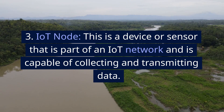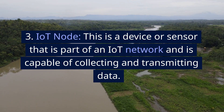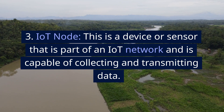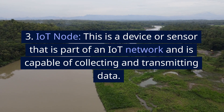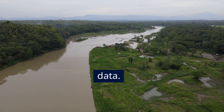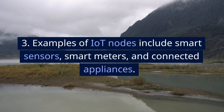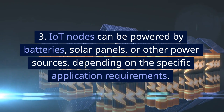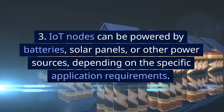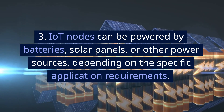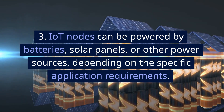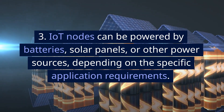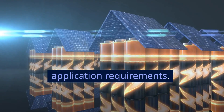IoT Node. This is a device or sensor that is part of an IoT network and is capable of collecting and transmitting data. Examples of IoT nodes include smart sensors, smart meters, and connected appliances. IoT nodes can be powered by batteries, solar panels, or other power sources, depending on the specific application requirements.